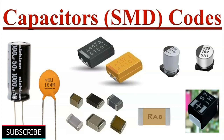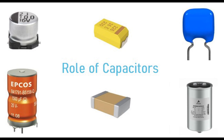Frequency determination in oscillators: Capacitors are integral components in oscillators, which generate periodic waveforms. The time constant of an RC circuit in an oscillator, along with other components, determines the frequency of the oscillation. For example, in an astable multivibrator circuit, the charging and discharging of a capacitor through resistors determines the frequency of the square wave output. Timing elements are crucial in various electronic applications, including clock generation, pulse width modulation, and frequency synthesis.